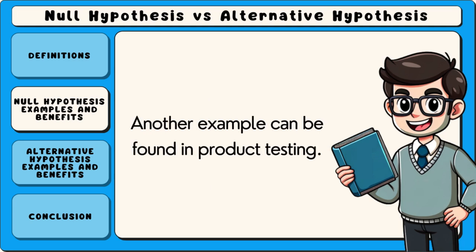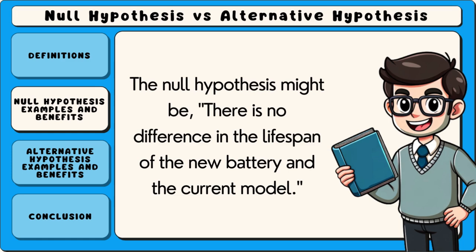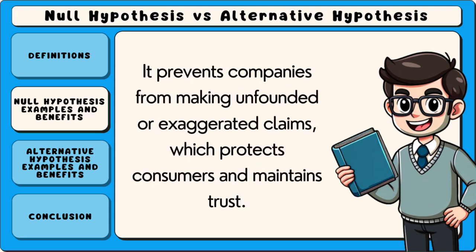Another example can be found in product testing. Suppose a company wants to know if a new battery lasts longer than the current model. The null hypothesis might be there is no difference in the lifespan of the new battery and the current model. This approach ensures that claims about the product are only made if the data strongly supports them, preventing companies from making unfounded or exaggerated claims, which protects consumers and maintains trust.